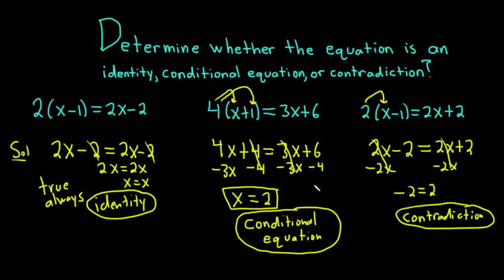Now, I kept saying in the domain of the variable. Every time I mentioned identity or conditional equation, I mentioned domain of the variable. Remember, an identity is an equation that is true for all real numbers in the domain of the variable. A conditional equation is an equation that is true for some real numbers, but not all in the domain of the variable. So what do I mean by the domain of the variable?